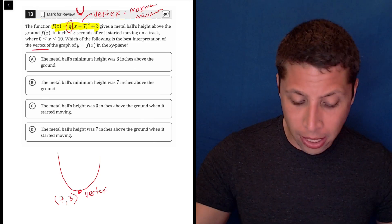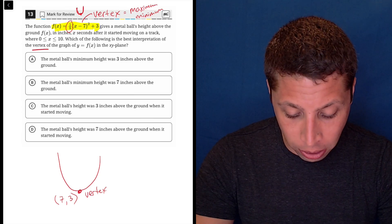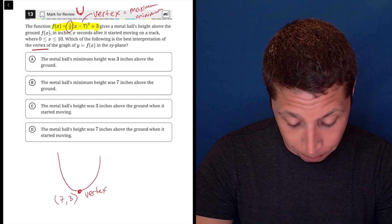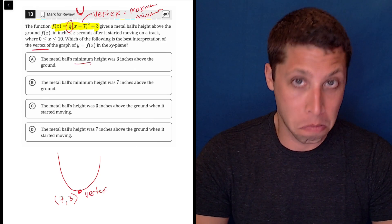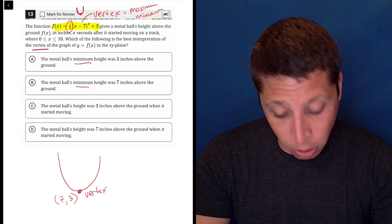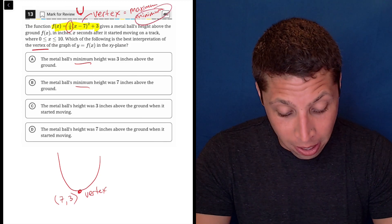Now let's look at our answer choices. What is the meaning of the vertex? Well, this is a metal ball's height above the ground after it moves on a track. So the metal ball's minimum height, well that's a good sign, minimum height was three inches above the ground. The metal ball's minimum height was seven inches above the ground. So those both sound like we're using the right word here.